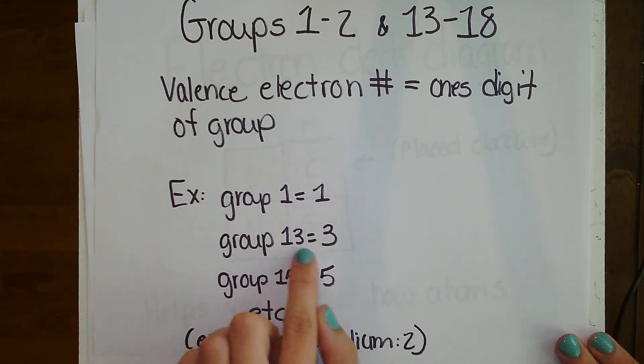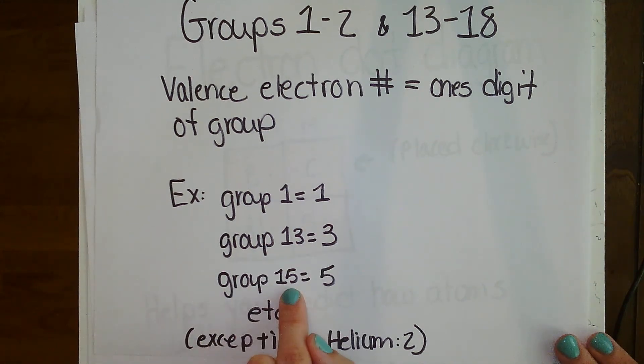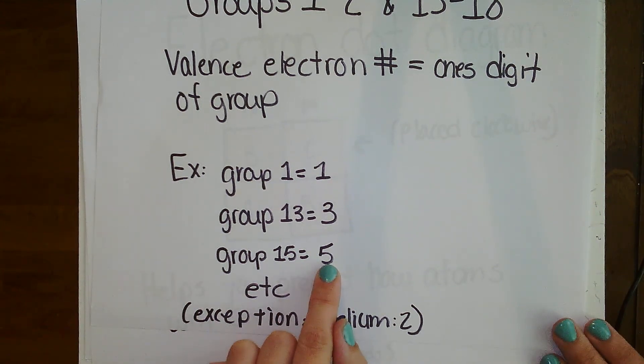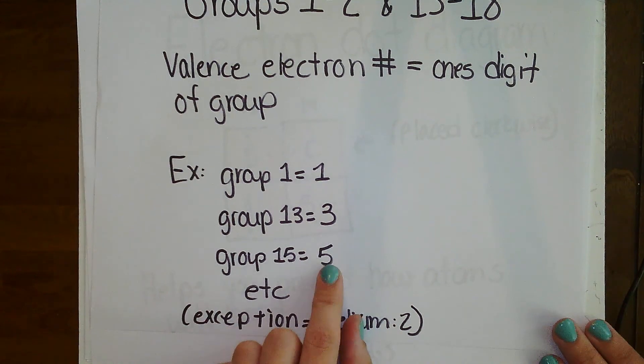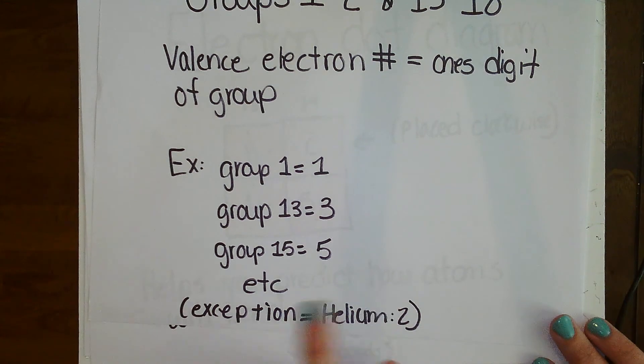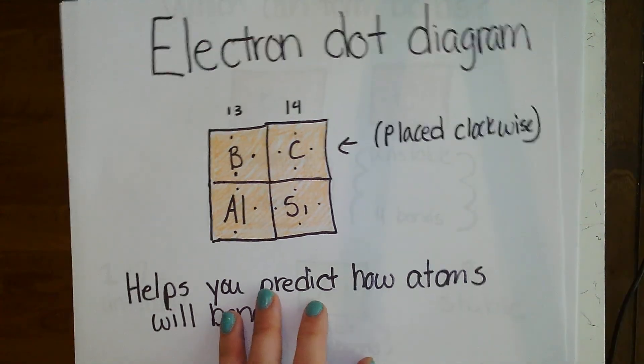In these groups, the valence electron number equals the ones digit place of the group. For example, group number 1 has a valence number of 1. Group number 13, let's find the ones digit place. Go back to your elementary math. The ones digit place is 3, so it has a valence electron number of 3. Group 15, what's the ones digit place? Yes, 5. So it has how many valence electrons? 5. The only exception to this is helium. It is a noble gas. It's in group 18, however its number is 2. We'll talk about that a little bit more at a later time.